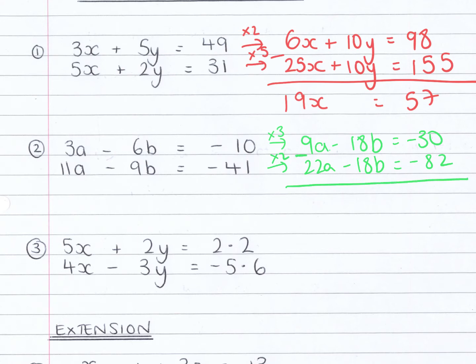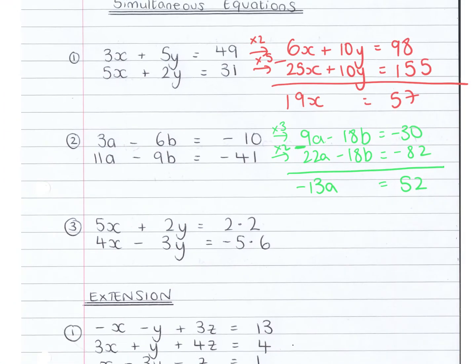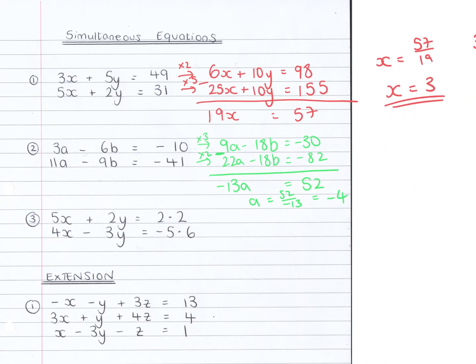Right, again we're subtracting to get rid of the b's. Minus 18b minus minus 18b is nothing. So 9a minus 22a is minus 13a, and minus 30 minus minus 82, so that's minus 30 plus 82 is 52. So a must be 52 divided by minus 13, that's minus 4. So a equals minus 4.